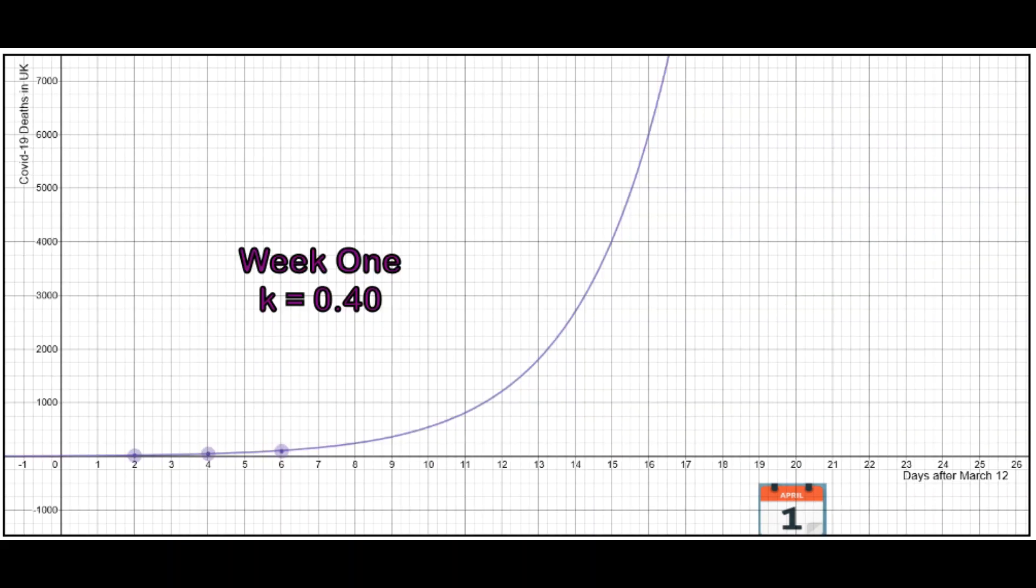Now, week one, therefore, was March the 12th to March the 19th. And the data there, although quite low totals, was worryingly showing that if it was exponential growth, the growth constant of 0.40 meant that the curve would rise very sharply indeed, meaning that there would be quite high death totals coming very rapidly.